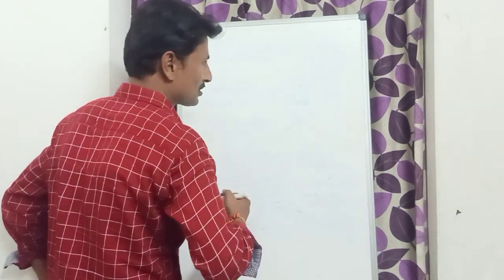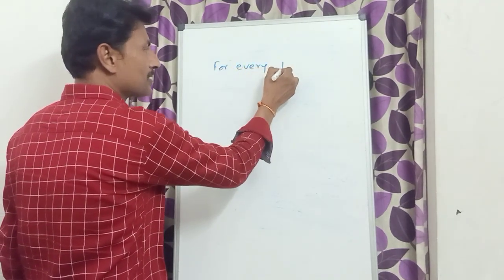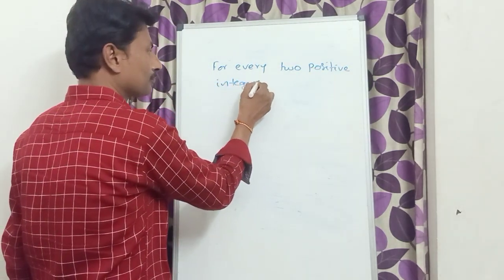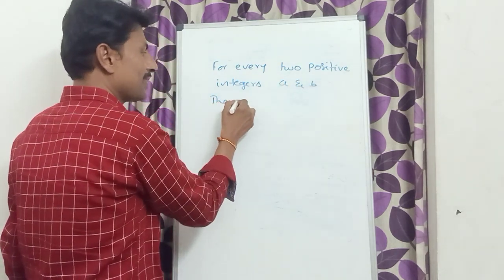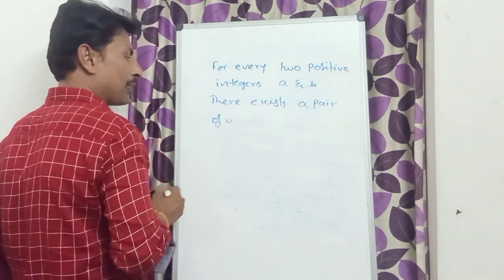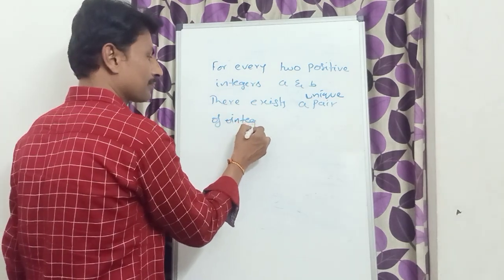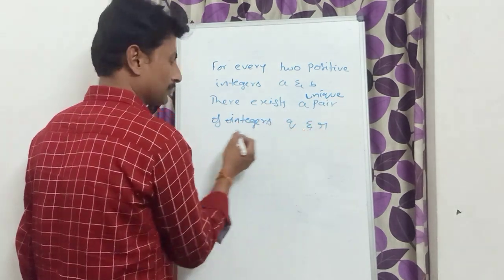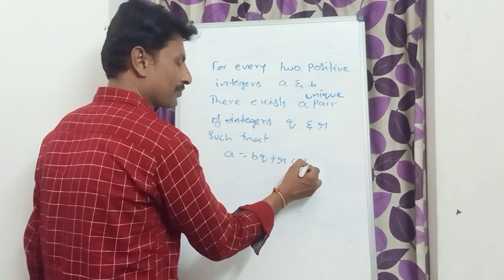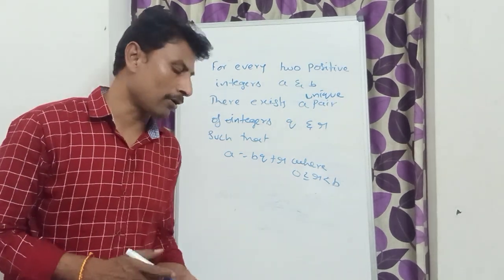So first let me write the Euclid's division lemma statement. For every two positive integers A and B, there exist a unique pair of integers Q and R, such that A is equal to BQ plus R, where 0 is less than or equal to R, and R is less than B.